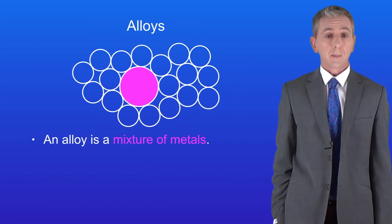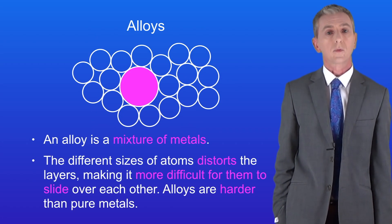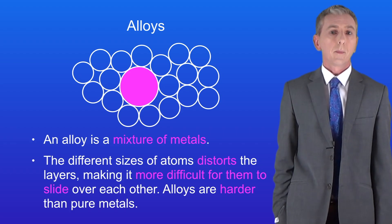An alloy is a mixture of metals. The different sizes of atoms distorts the layers, making it more difficult for them to slide over each other. This means that alloys are harder than pure metals.